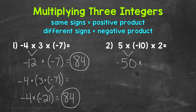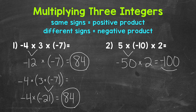Bring down our multiplication sign and the two. So we end with negative 50 times two. We have different signs — a negative times a positive — so we know it's going to be negative. Think of this as 50 times two, which is 100, and again, it's going to be negative. Final answer: negative 100.